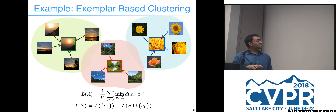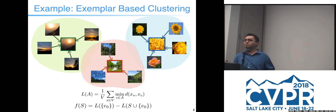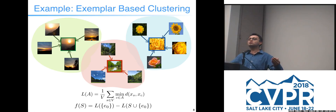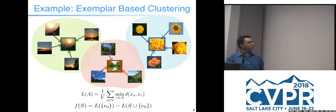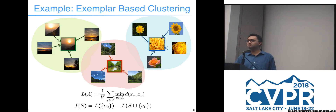The difference between exemplar-based clustering and standard clustering is that in standard clustering, cluster centers can be anywhere — in the middle of the data. In exemplar-based clustering, it makes no sense to return an exemplar that is not an actual data point; I cannot return three images that are a combination of other images. That is why we require the centers to be one of the data points. This is exactly the facility location objective function that Ehsan discussed.